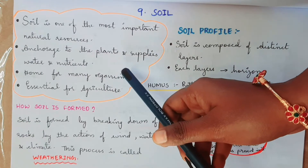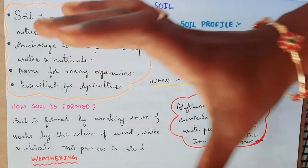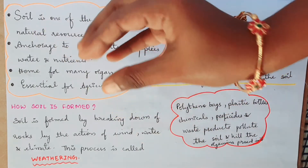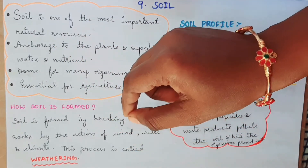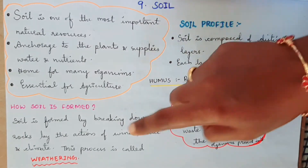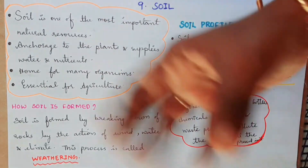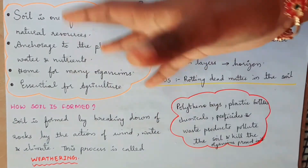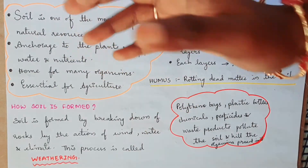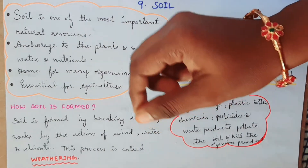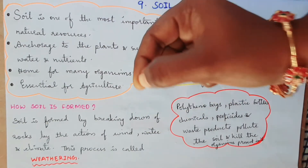Now we are going to show how the soil is formed. When rocks break, we are going to show how the soil is formed. This is how the soil is formed due to climatic conditions. If there is a lot of wind or a lot of water flow, the soil is formed. We will also show how the soil is formed due to plants.